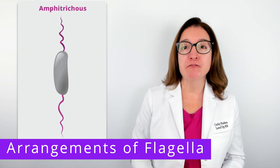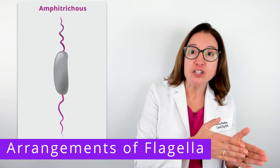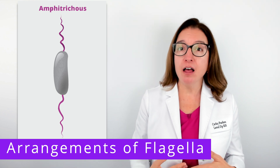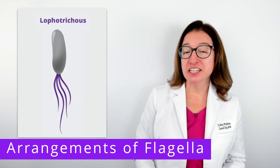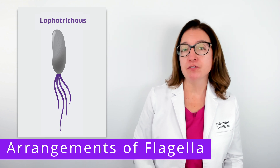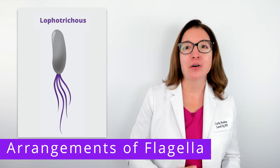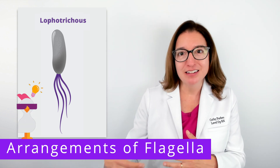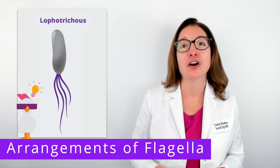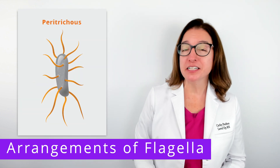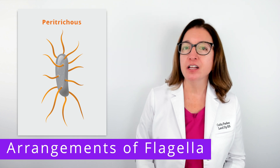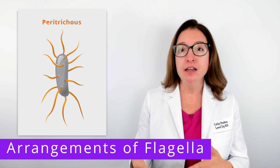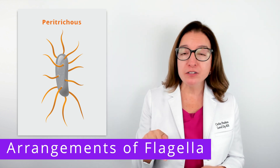A bacterium that is amphitrichous has a flagellum on each end of the cell — 'amphi' means both sides, so we have flagella on both sides. A bacterium that is lophotrichous has a tuft of flagella at one end of the cell. Our cold chicken hint: lophotrichous equals lopsided — both start with 'lop.' Finally, a bacterium that is peritrichous has flagella covering the entire cell — 'peri' means around or surrounding, so we have flagella all around the cell.